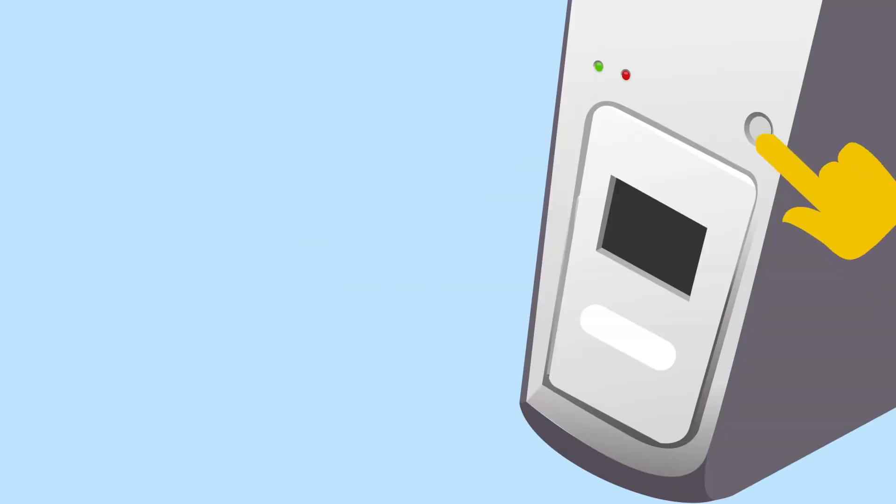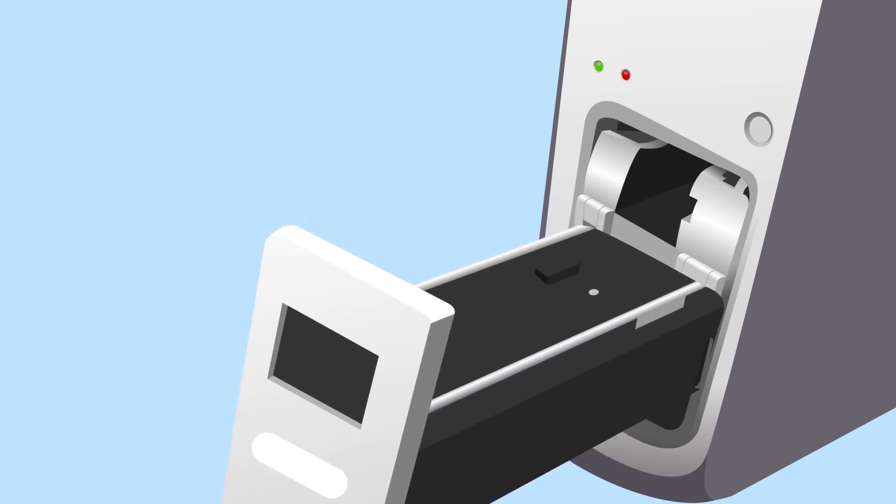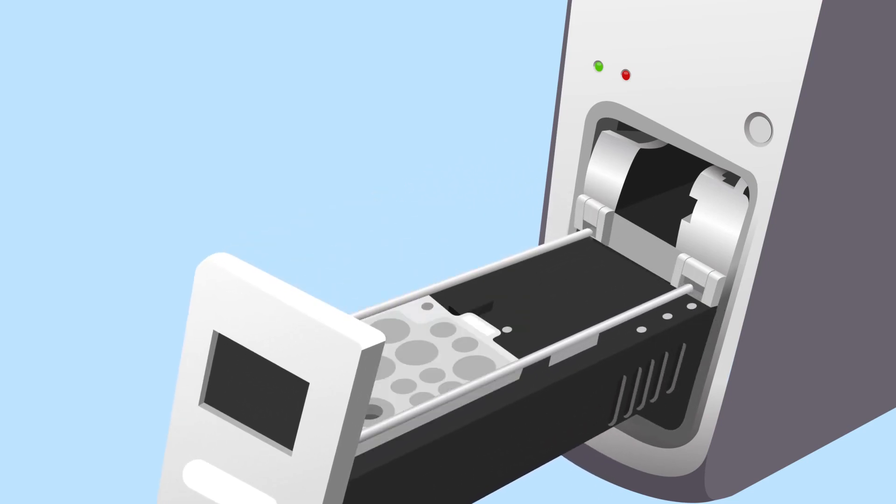To perform a test, open the drawer of the Verigene Processor SP and load an extraction tray, tip holder assembly, and utility tray.